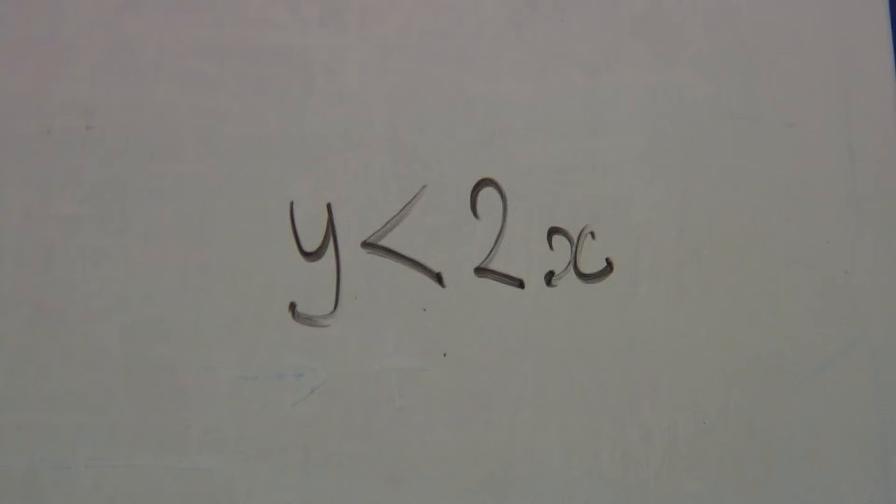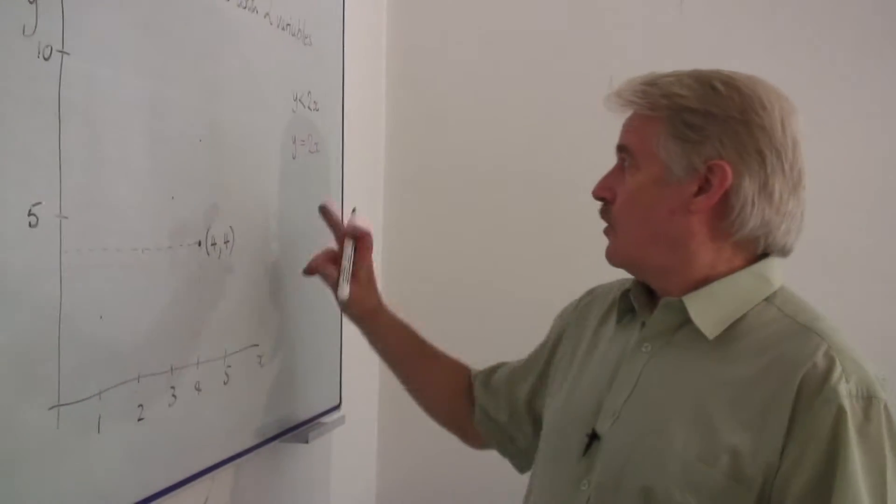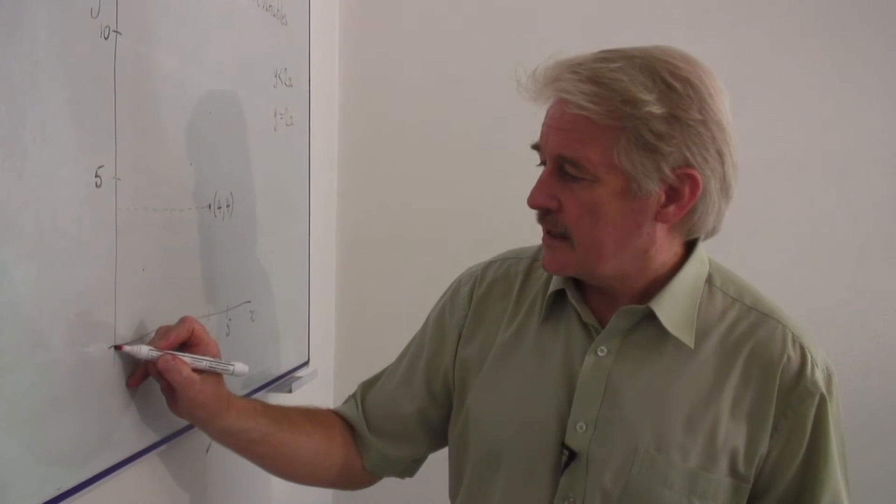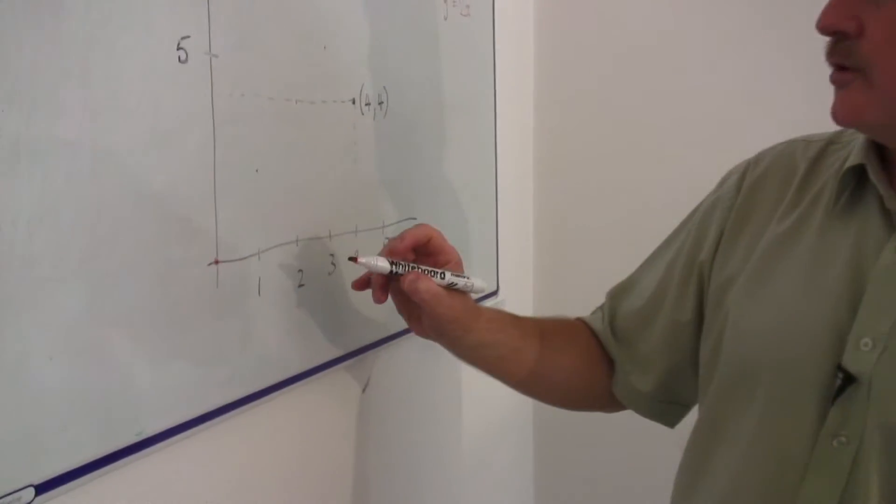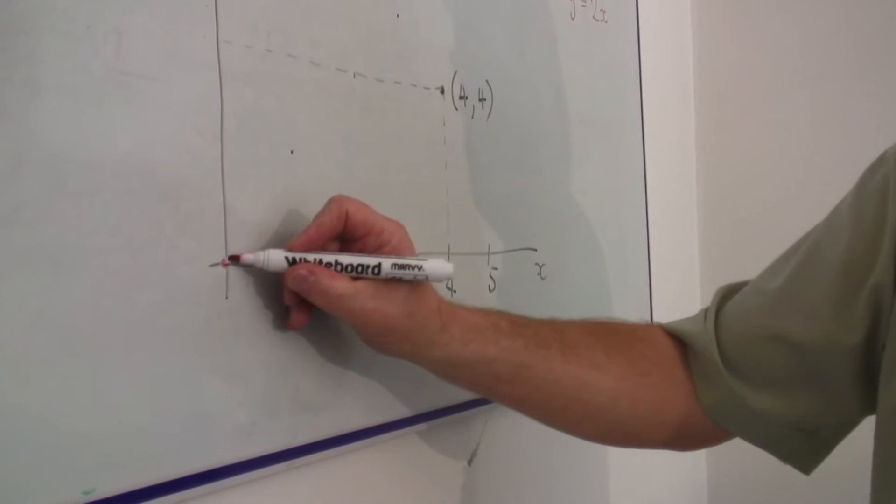It's not more than two x, it's less than two x. So if we plot y is two x. In fact, that's zero, zero is the first point. Then x is one, y is two is the next point.